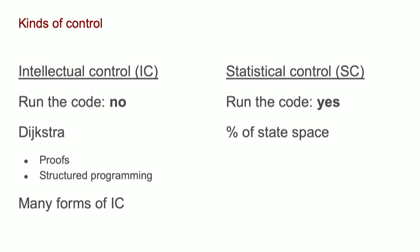Let me contrast intellectual control with statistical control. With statistical control, you run the code once — or many times — and because you run it in representative cases, you give yourself confidence: yeah, I ran it, it does what I expected it to do.